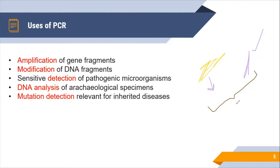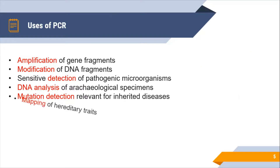After sequencing, we align and compare the two sequences to detect what changes are present. Those changes may be the result of the mutation causing the disease. The benefit of detecting this mutation is that we can determine the percentage of a mutated allele in the population, understand how prevalent the inherited disease is, and map the hereditary trait or mutation in the population.